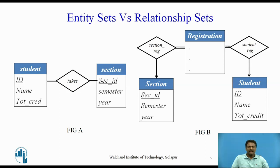It is not always clear whether an object is best expressed by an entity set or a relationship set. In figure A, we use the takes relationship set to model the situation where a student takes a section of a course. An alternative is to imagine that there is a course registration record for each course that each student takes. Then we have an entity set to represent the course registration record — let us call that entity set registration. Each registration entity is related to exactly one student and to exactly one section, so we have two relationship sets: one to relate course registration records to students and one to relate course registration records to sections. In figure B, we show entity sets section and student from figure A with the takes relationship set replaced by one entity set and two relationship sets.